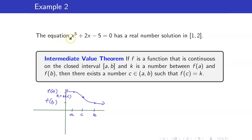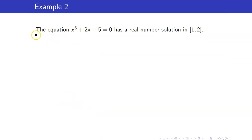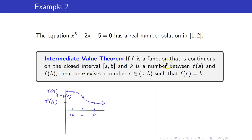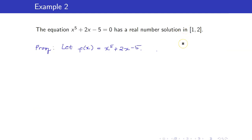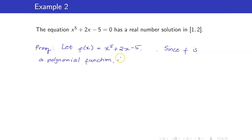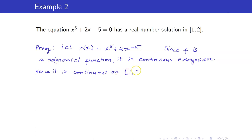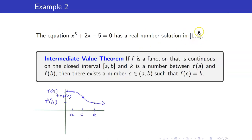What will be our function here? We will take our function f to be x to the fifth plus 2x minus 5. For our proof, let f of x be equal to x to the fifth plus 2x minus 5. First, we have to show that it is continuous on the closed interval 1, 2. Since f is a polynomial function, it is continuous everywhere, and therefore it is continuous on this closed interval.